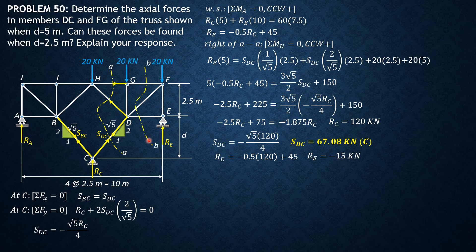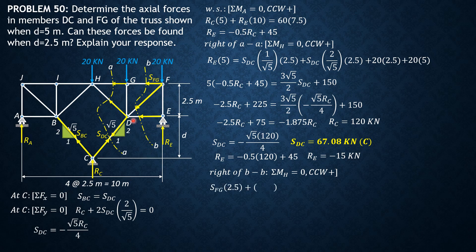Sectioning at BB, the involved forces include S_FG. The other two cut members pass through point D, so we sum moments about D equals zero, considering forces to the right of section BB. Summation of moments about D equals zero, counterclockwise positive: S_FG times 2.5, plus R_E (which is negative 15) times 2.5, equals 20 times 2.5. Solving: S_FG equals positive 35 kN, so it is tension.